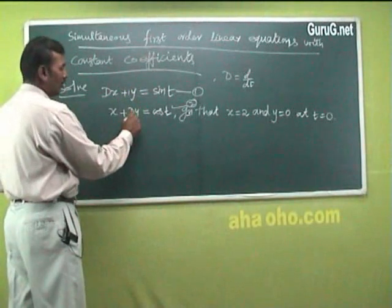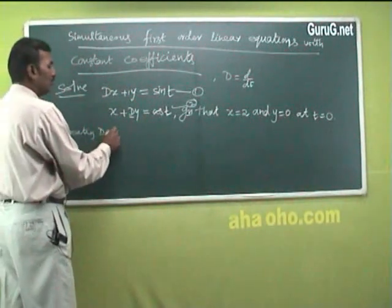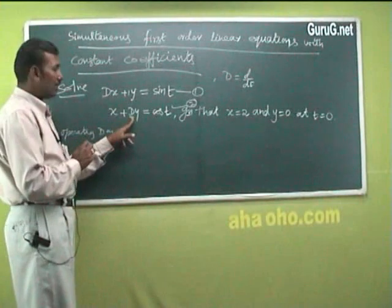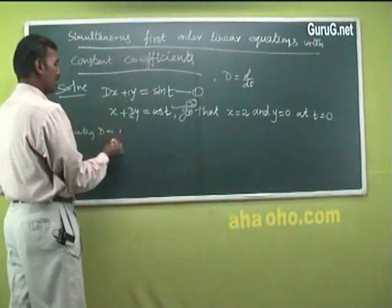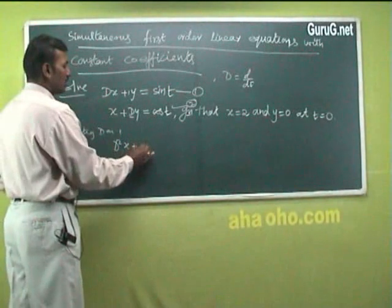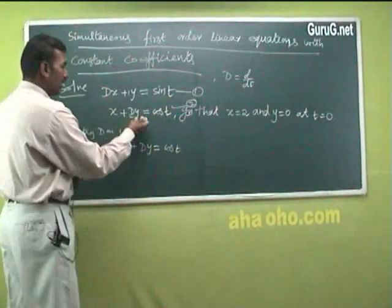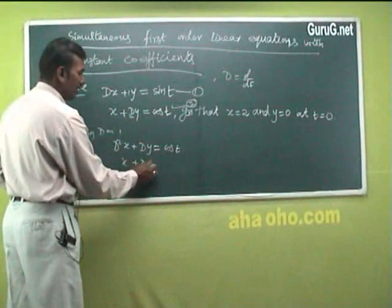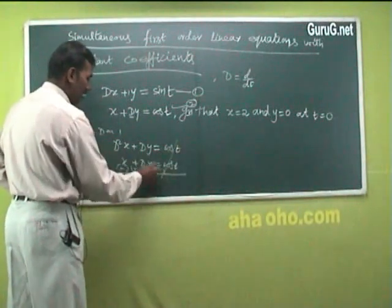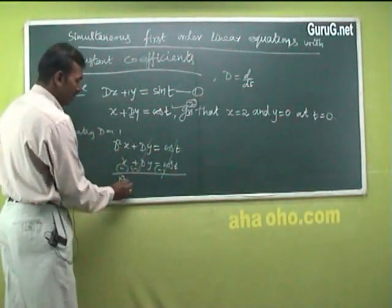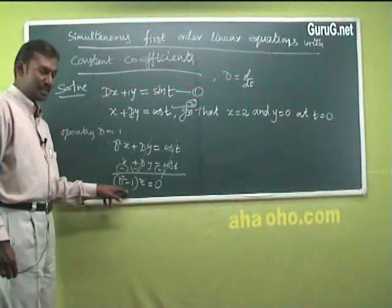Here the coefficient is 1 and here the coefficient is d. So operating d on equation 1, you get d²x plus dy equal to d by dt of sine t, which is cos t. The second equation as it is: x plus dy equal to cos t. You subtract these two, this will get cancelled, so d² minus 1 into x equal to 0.